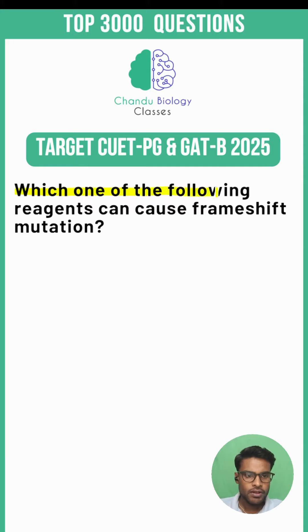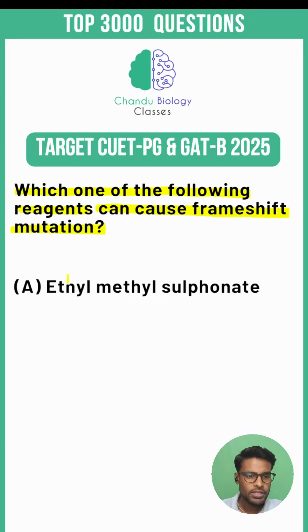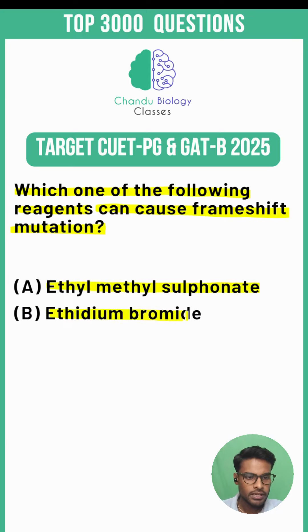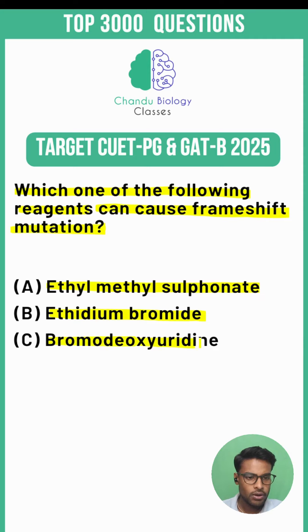Which one of the following reagents can cause frameshift mutation? Option A: ethyl methyl sulfonate. Option B: ethidium bromide. Option C: bromodeoxyuridine. Option D: aflatoxin.